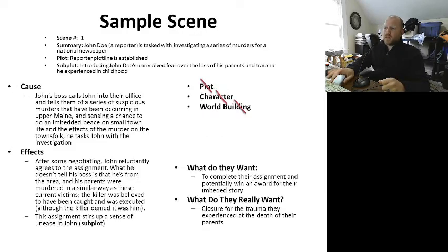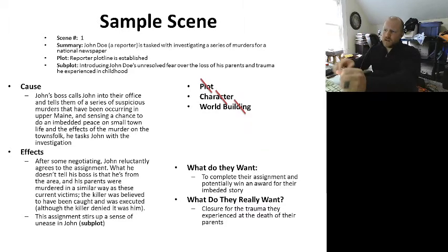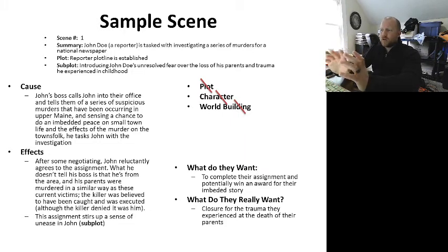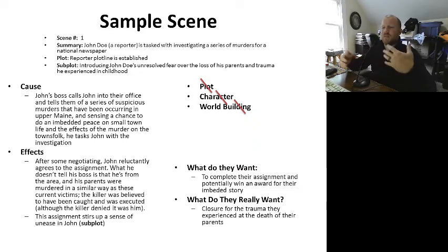Here is an example — I just made this up off the top of my head. Scene number one for a psychological thriller story. Summary: John Doe, a reporter, is tasked with investigating a series of murders for a national newspaper. The plot: the reporter plot line is established — he's going to be investigating the series of murders. The subplot introduces John Doe's unresolved fear over the loss of his parents and the trauma he experienced in his childhood. Obviously when you're writing it out you'll know what this means, so you can keep it shorthand.